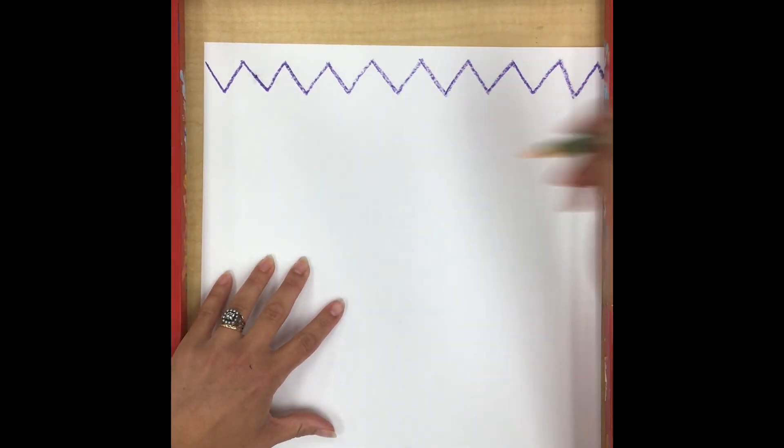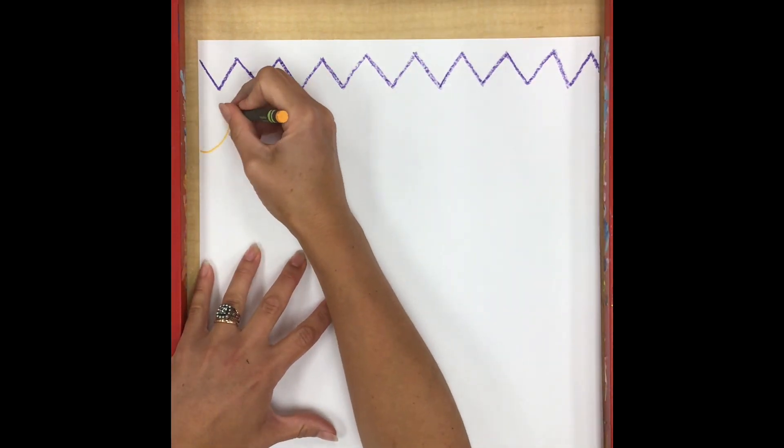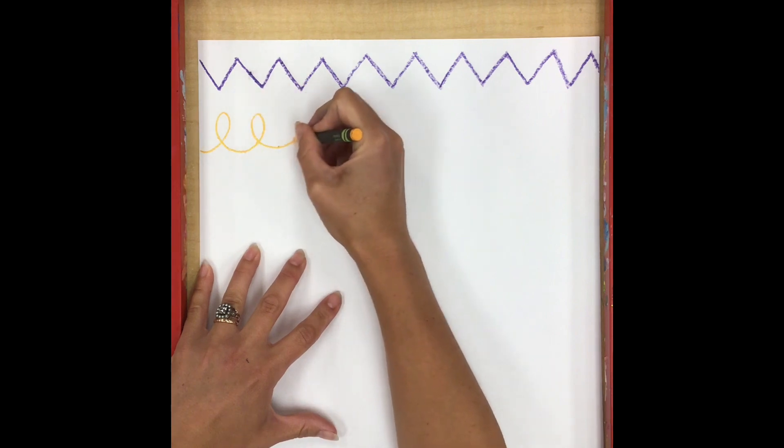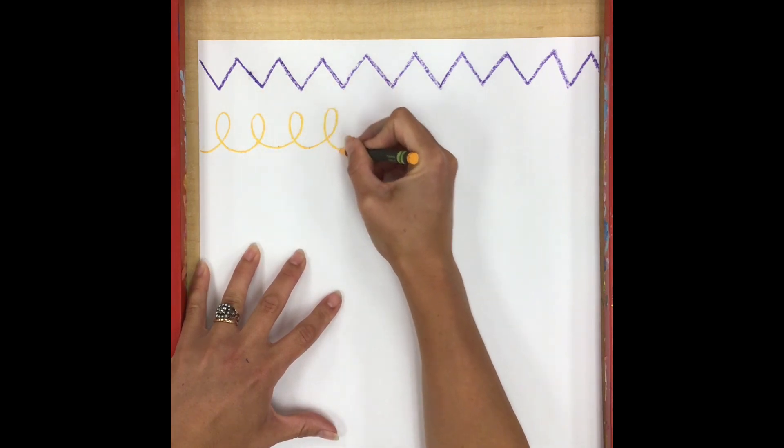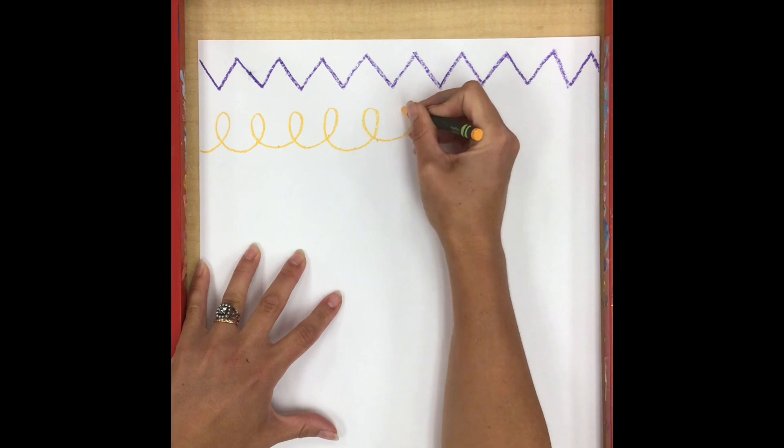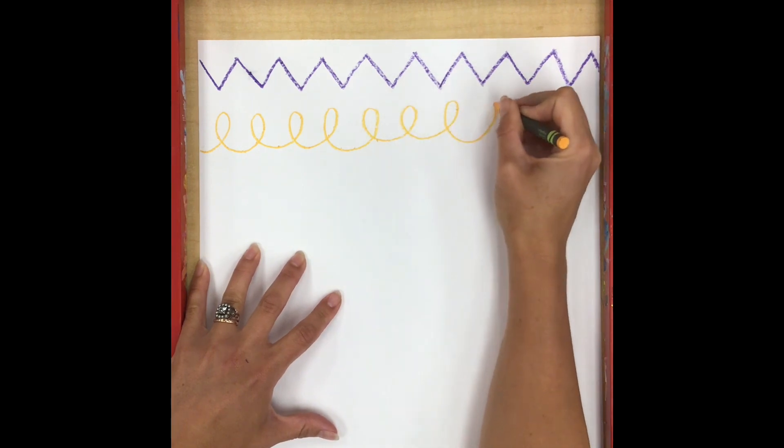Now when I finished one line, I can pick a different color and do a different kind of line. You can do lines from your worksheet or you might even invent some new kinds of lines.